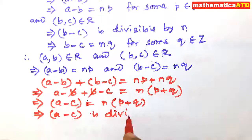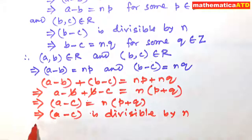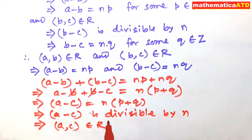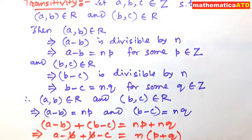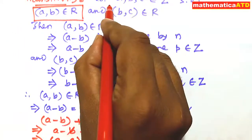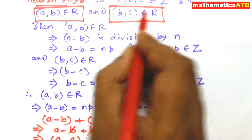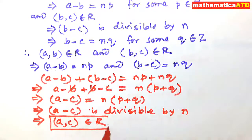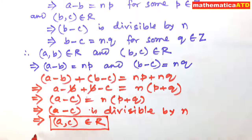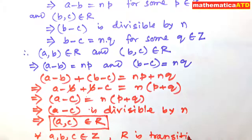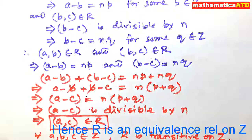It implies that the ordered pair (a, c) belongs to R. We considered that (a, b) belongs to R and (b, c) belongs to R, and both together imply (a, c) belongs to R. So we conclude that for all a, b, c belonging to Z, R is transitive on Z. Thank you, have a nice day.